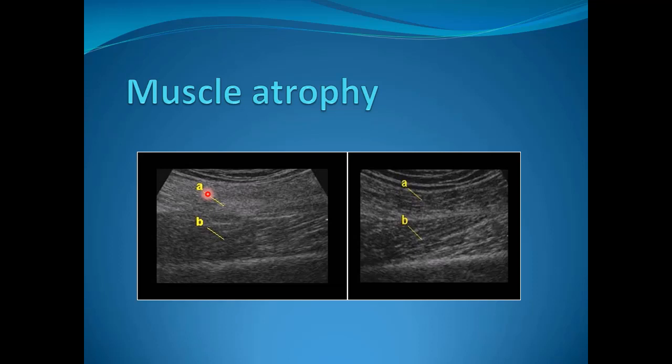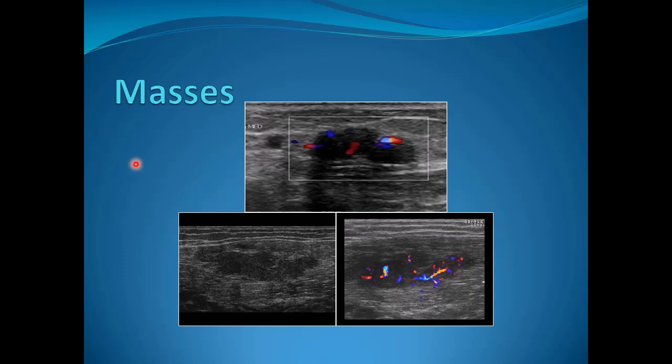This is an example of muscle atrophy, showing increased echogenicity of the muscle compared to the normal side with a slight decrease in bulk. This can be seen in patients with repeated traumas, particularly athletes affecting a particular muscle, or in patients with generalized muscle myopathies.